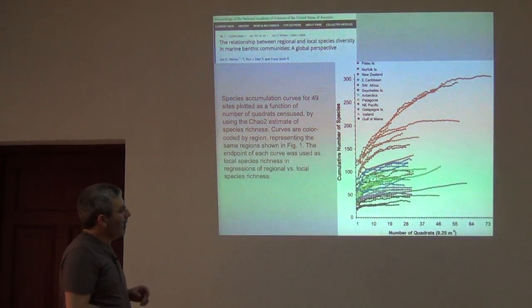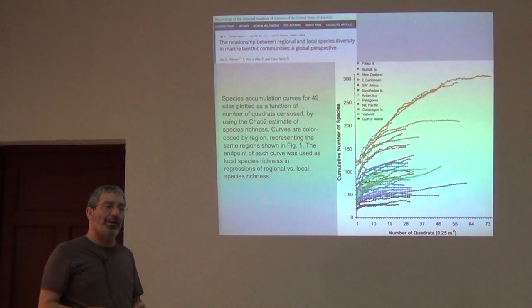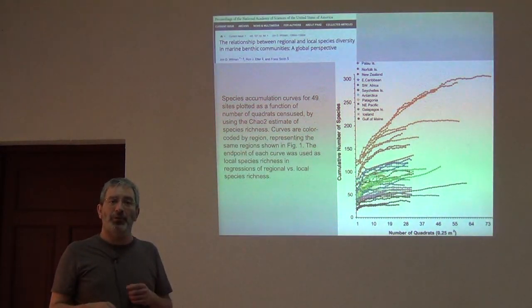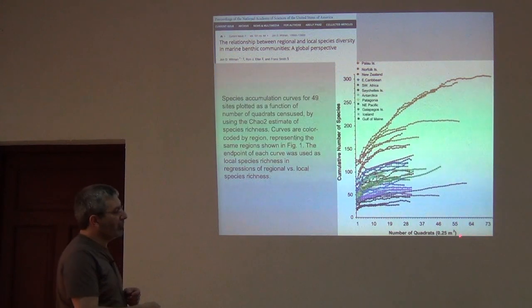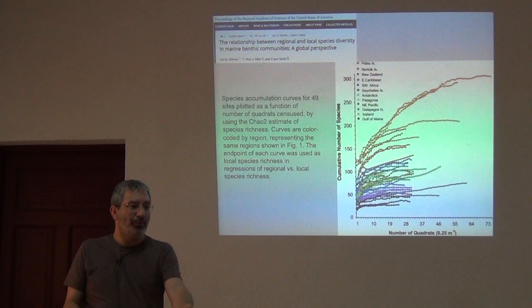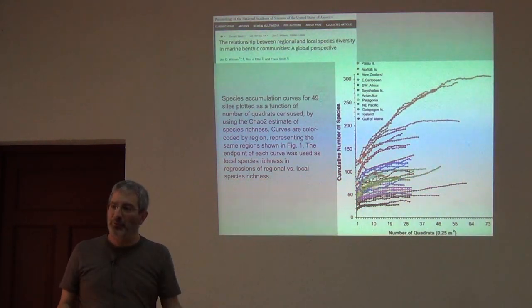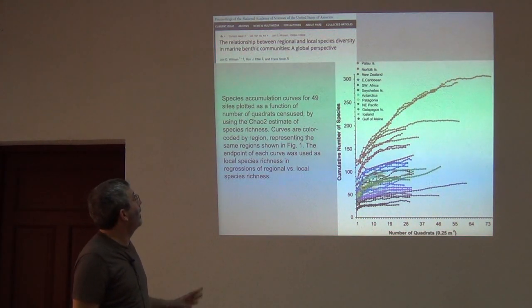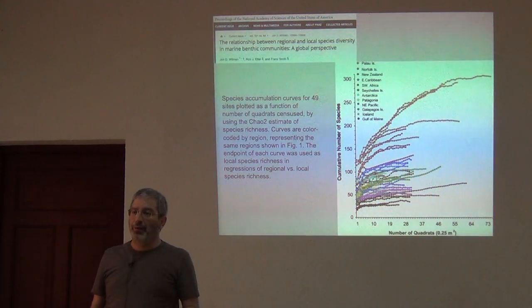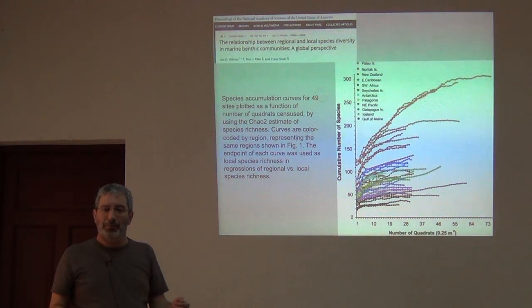Color coded by region. And all I want you to see is that here the unit of effort in our species accumulation curve is not day like we'll probably do in Corrup, but rather it's quarter meter squared quadrats. So they're plopping this tiny little square down on the ocean floor, and they're seeing how many species of invertebrates and such are present in that square.